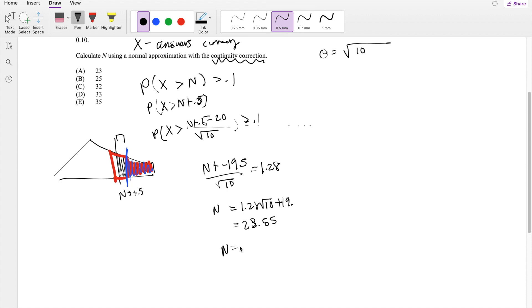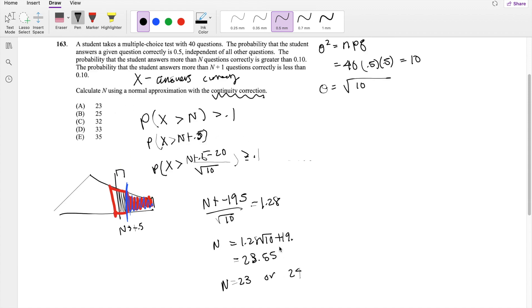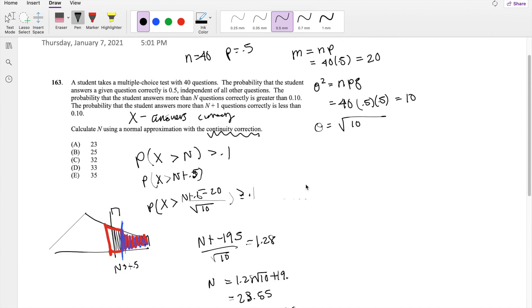So N can be equal to 23 or 24. Let's just double check which one it will be. Oh, it actually can't be 24 because that's not one of the choices. But let's just double check to make sure 23 is indeed greater than 0.1.